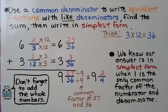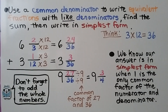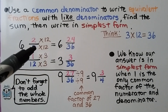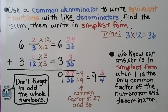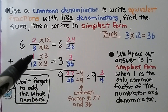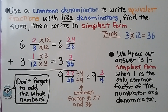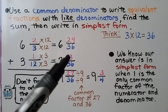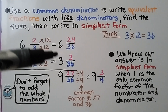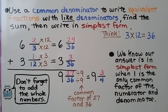Use a common denominator to write equivalent fractions with like denominators to find the sum, then write in simplest form. We have 6 and 2 thirds plus 3 and 1 twelfth. We think 3 times 12 is 36, so we can use 36 as our common denominator. 3 times 12 is 36, so we multiply 2 times 12 to get 24. 12 times 3 is 36, so we multiply the numerator times 3. We add the numerators: 24 plus 3 is 27. We use the common denominator 36, and add the whole numbers: 6 plus 3 is 9. We have 9 and 27 thirty-sixths.